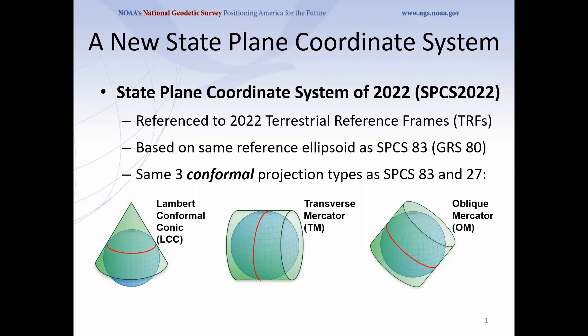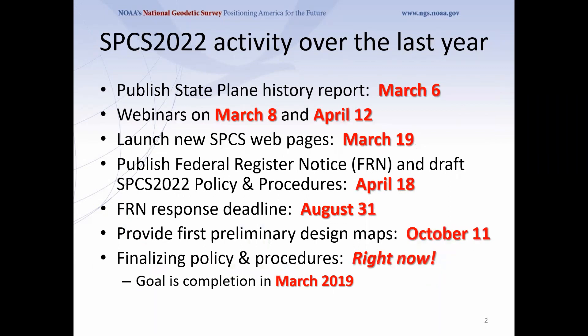As everybody knows, there's going to be a new state plane coordinate system to go along with the new terrestrial reference frame from 2022. Some things are still the same — it'll still be based on the same reference ellipsoid as before, GRS-80, and the same three conformal projection types: Lambert Conformal Conic, Transverse Mercator, and Oblique Mercator. But there will be some differences. A lot's been going on with state plane — it's been almost exactly a year since we really kicked this off.